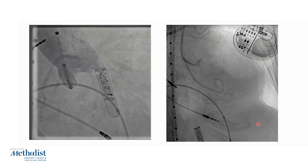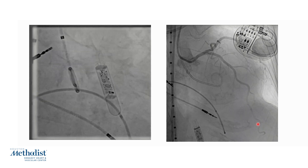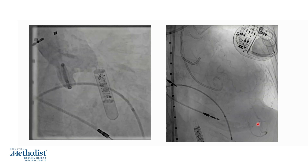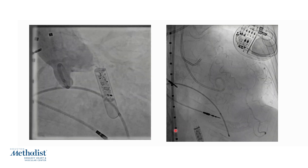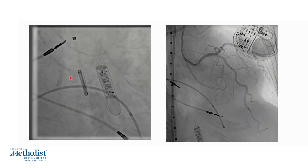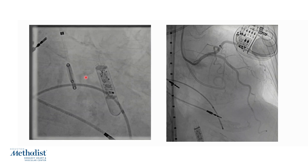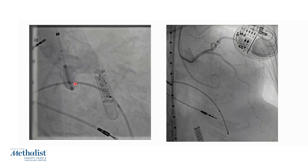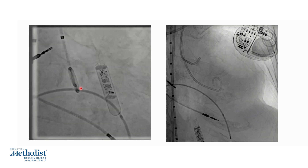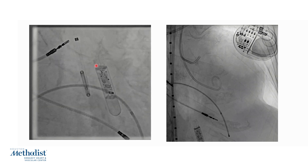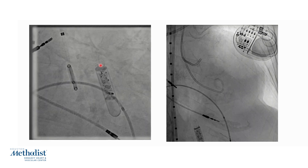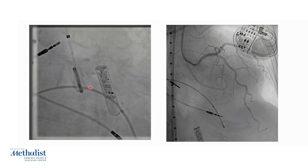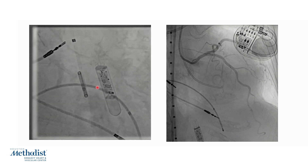Here is the procedure: a routine TAVR with access in bilateral femoral arteries and a pacemaker into the right ventricle. The patient already has a pre-existing pacemaker. A pigtail catheter has been placed in the non-coronary cusp, and this is the aortic root angiogram in the cusp overlap angulation. Cusp overlap isolates the non-coronary cusp with the pigtail in that cusp, while the right and left coronary cusps are overlapped, showing the nadir of the non-coronary cusp — the view in which we deploy the valve.